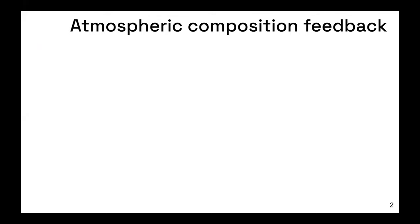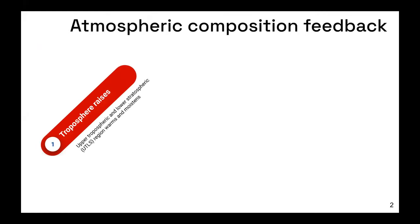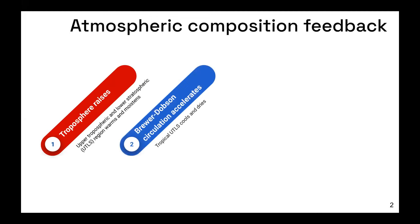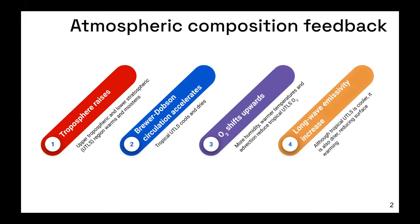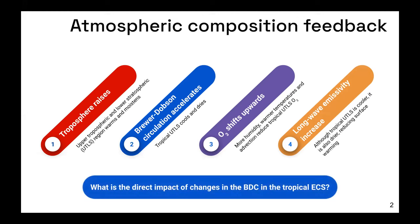GCMs under warming show that the tropopause rises, which warms and moistens the upper tropospheric and lower stratospheric UTLS region. In contrast, the Brewer-Dobson circulation leads to stronger stratospheric upwelling and therefore cools and dries the UTLS. In response to these two processes, the ozone shifts upwards, leading to more cooling and drying of the UTLS. The result is higher longwave emissivity, which leads to lower surface warming to equilibrate the forcing and therefore a lower climate sensitivity.